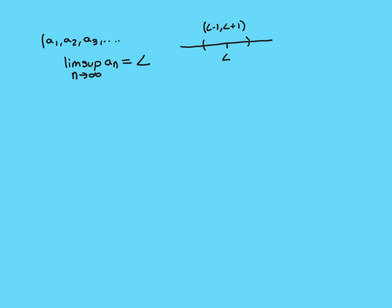I'm going to start off with an interval of radius 1, so the interval from L minus 1 to L plus 1, centred around L. To find the first term of my subsequence, I need a term of the sequence inside this interval. Because the limit superior equals L, the sequence of supremums converges to L. It's a monotonically decreasing sequence converging to L. By the definition of convergence, I can use 1 as epsilon and say that there must be a term in this sequence such that that term and all terms beyond it are inside this interval of radius 1 around L.